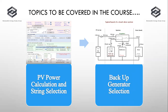The next point we're going to talk about is PV power calculation and string selection. Whenever we design any solar power plant, the key question is how to design the solar array — how many panels are required and how to make the series and parallel connections. In PVSyst software, by taking a company's solar panel and balancing the voltage and current using the relevant formulas, we can easily calculate the number of panels required and how to make the string and array connections.